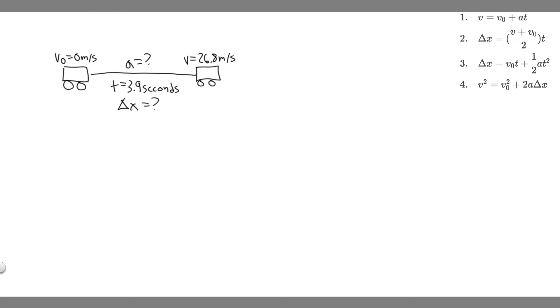The next thing you always want to do is write down the given. So which kinematic variables are we given? We're given the initial velocity, v sub zero, which we know is equal to zero.